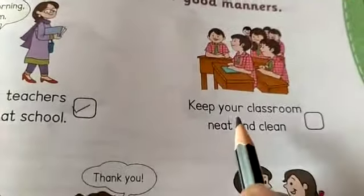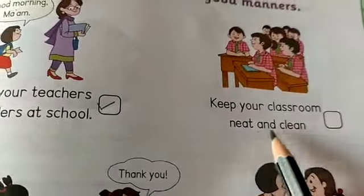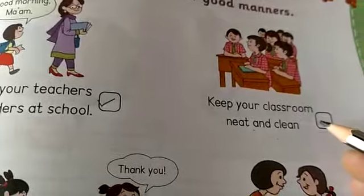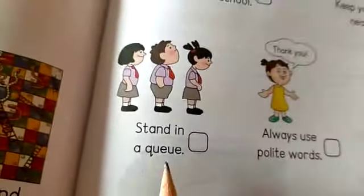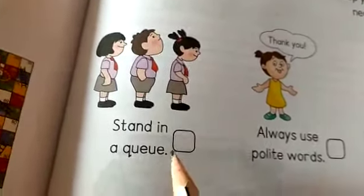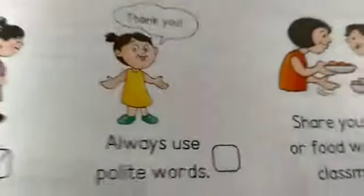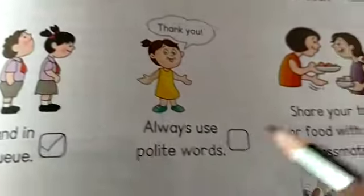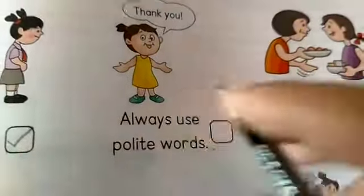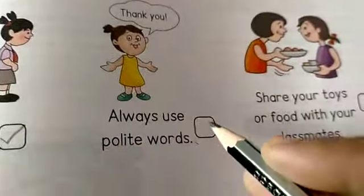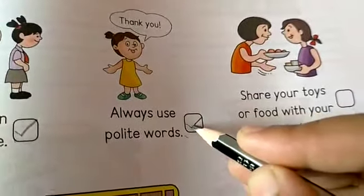Second one: keep your classroom neat and clean. This is also a good manner, so put a right mark. Stand in a queue — this is also a good manner; standing in a queue is a good manner, so put a right mark. Always use polite words — this is also a good manner, so put a right mark in front of this box.